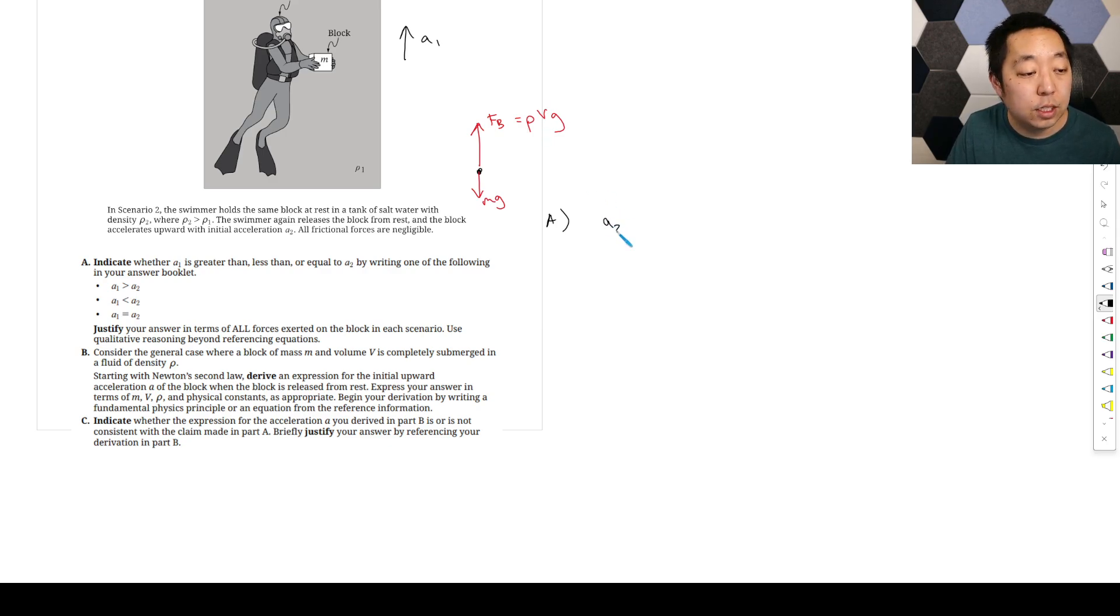So A2 is going to be greater than A1. Well, they wanted you to write it as A1 is less than A2. A2 is greater because it's greater density. So the bigger this is, the bigger this force is going to be. That's a greater upward force, so we're going to have a greater acceleration.